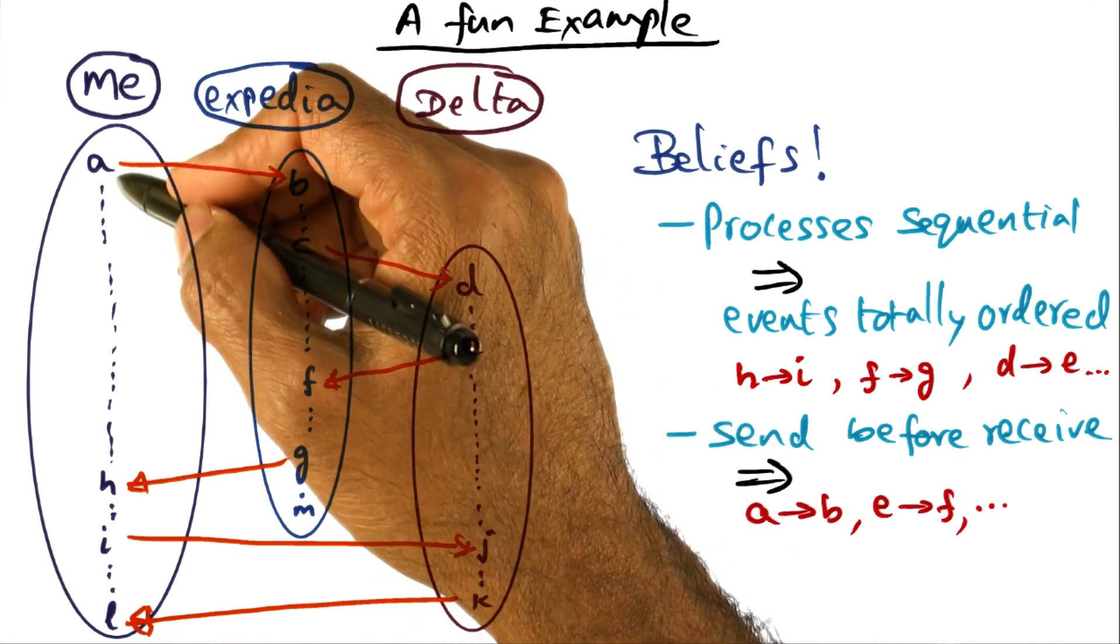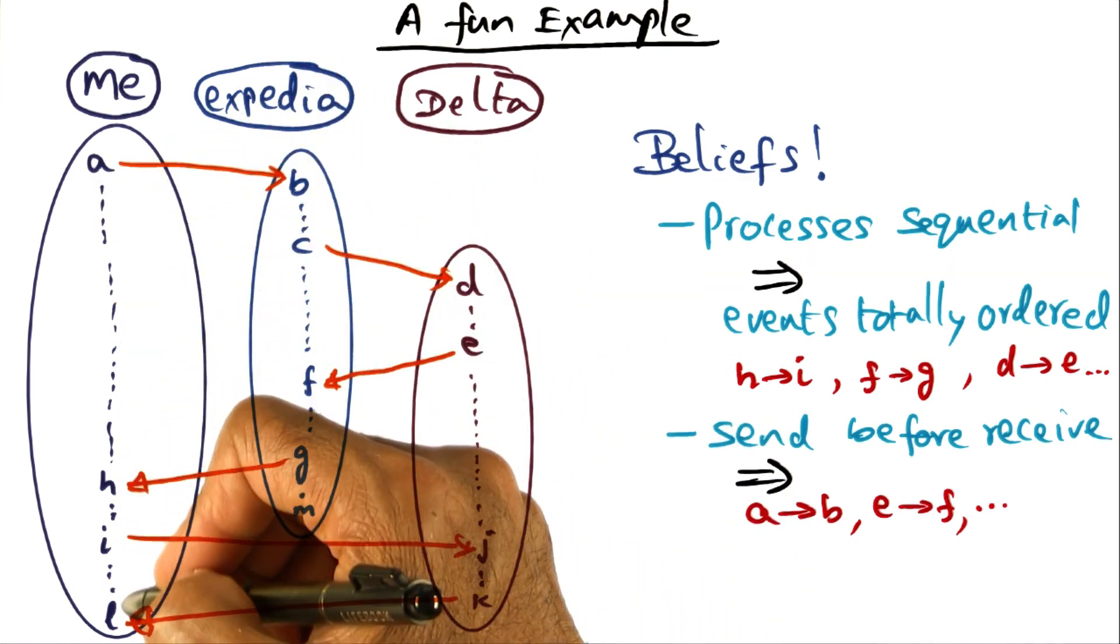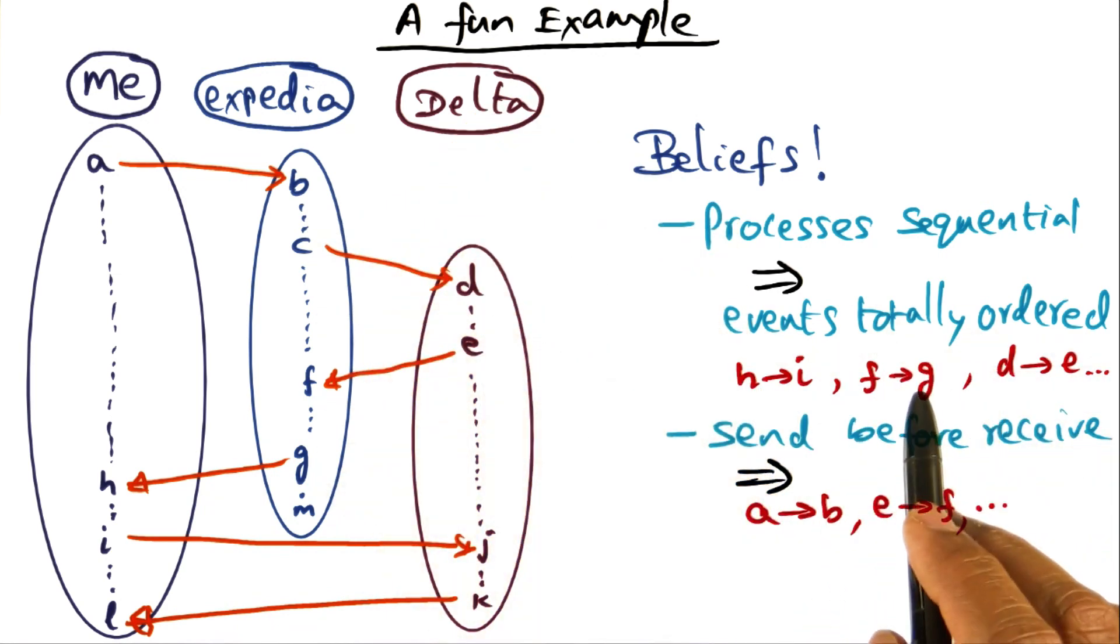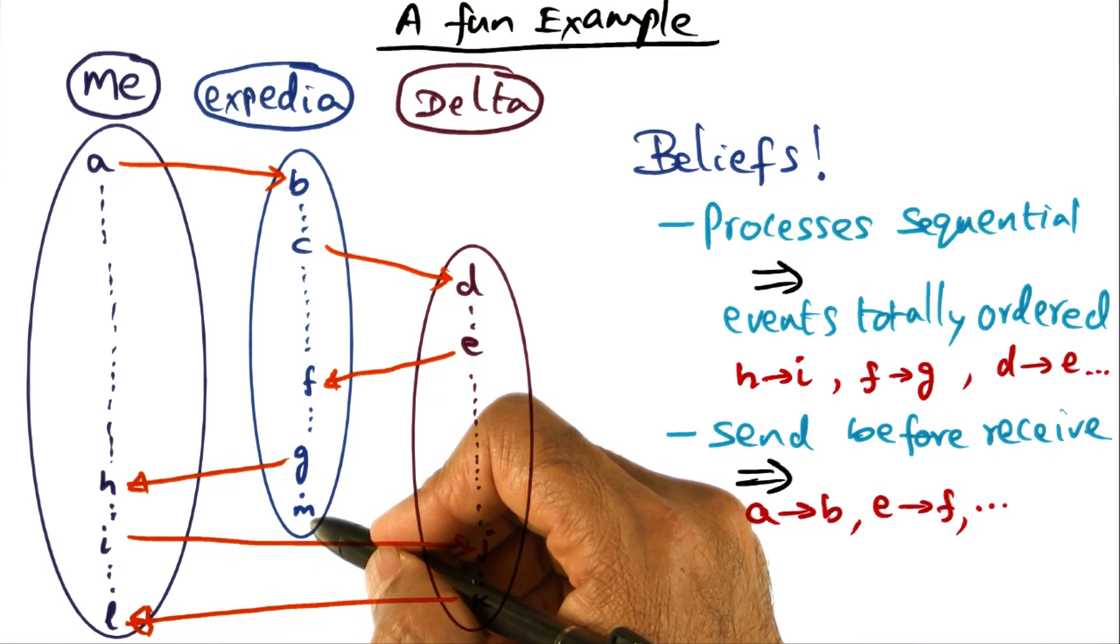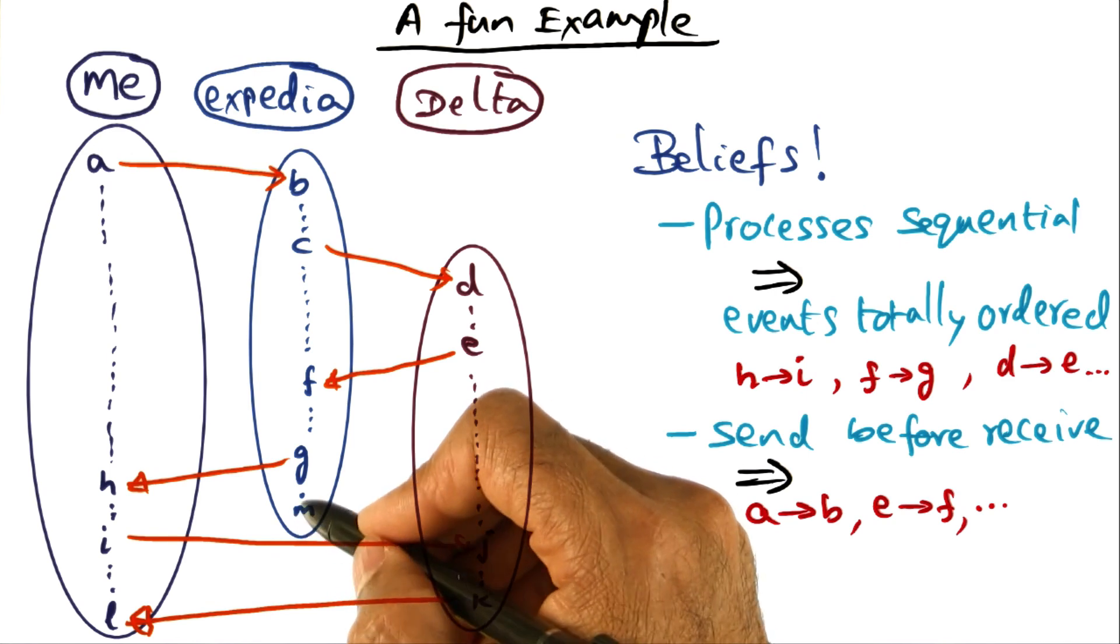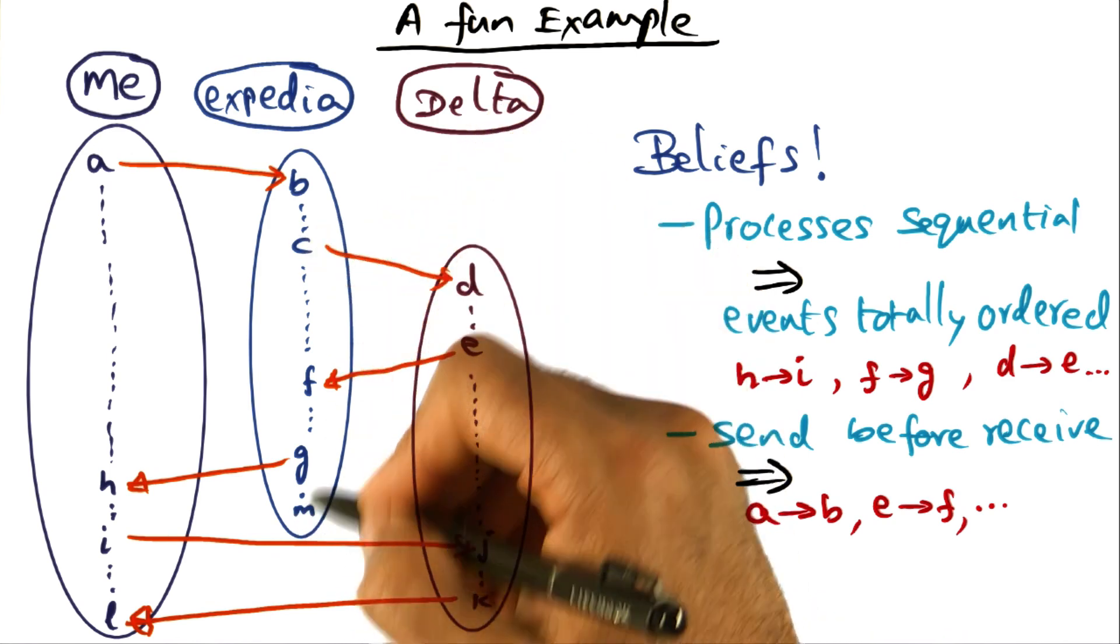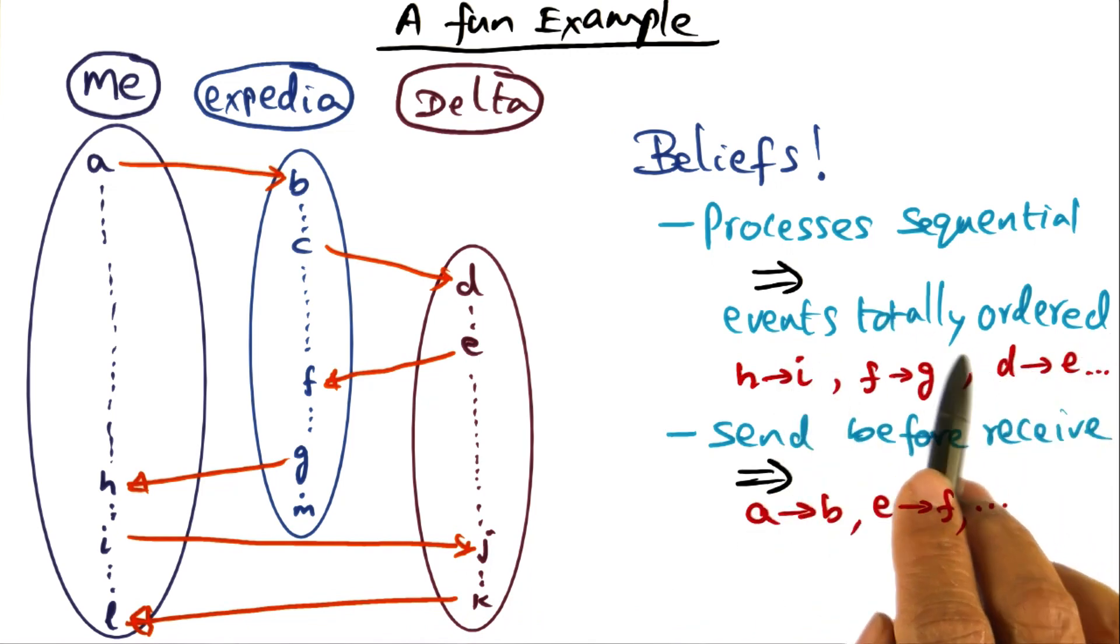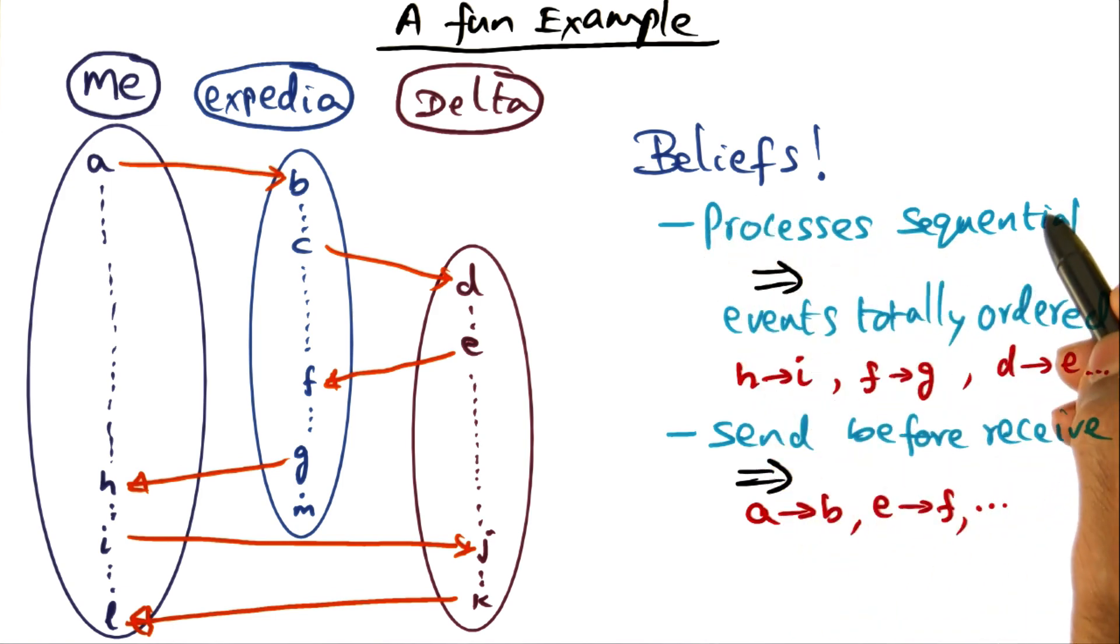So the beliefs that we have is that processes are sequential. That is, the events that we see happening in a given process, these are the events that are happening in a given process. We expect these events to be totally ordered, right? So for instance, you wouldn't expect, given this ordering of events that you see in Expedia's profile, that this event M happened before sending this message C, right? So that's the mental model that you have, that events are totally ordered within a single process. And that's why we are calling process sequential.